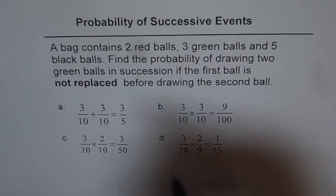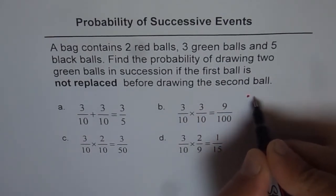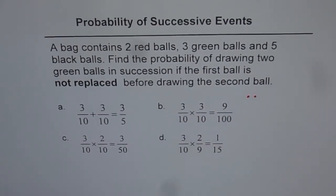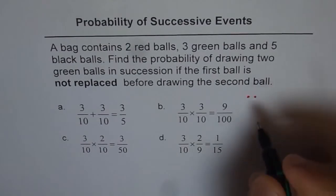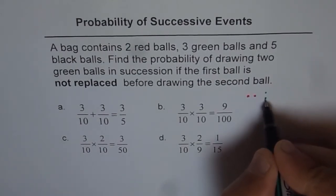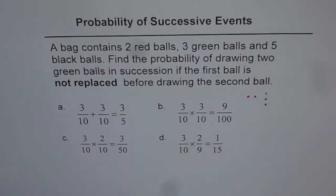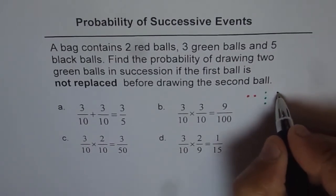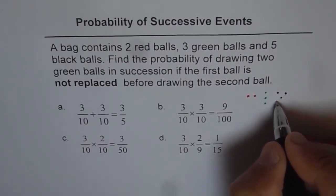Let's look into this scenario. We have two red balls. Let's say these are the two red balls and then we have three green balls. Let's say these are the three green balls and we have five black balls. Let's say these are the five black balls.